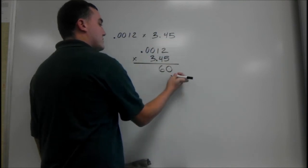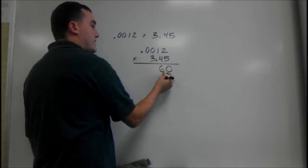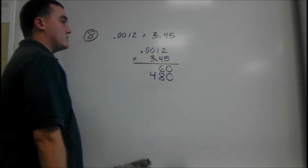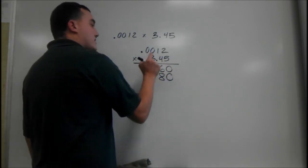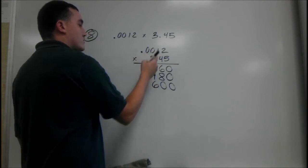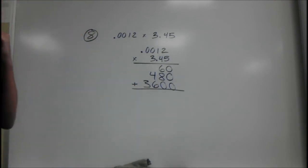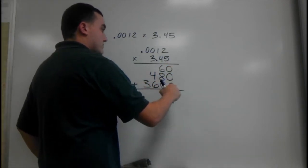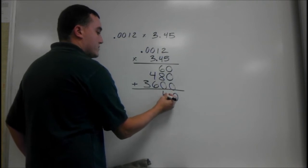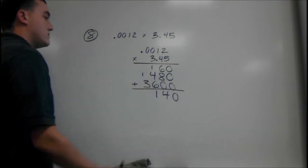4 times 2 is 8. But we have to put a 0 first. Then we can multiply. 4 times 2 is 8, 4 times 1 is 4. Since we're on the second digit, we have to put two 0s, then multiply again. 3 times 2 is 6, 3 times 1 is 3. Then we can add them up and figure out where our decimal goes. 0, 6 plus 8 is 14, so 4 goes down here. 1 plus 4 plus 6 is 11, and 1 plus 3 is 4.